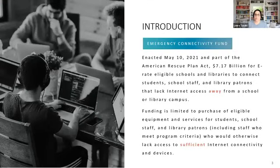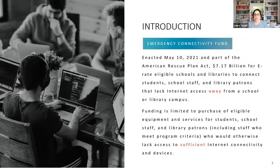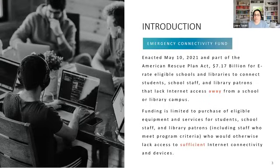A little introduction to the Emergency Connectivity Fund: it was enacted on May 10th of this year as part of the American Rescue Plan Act. It's $7.17 billion for E-Rate eligible schools and libraries to connect students, staff, and library patrons that lack internet access — specifically away from a campus. Library patrons include library staff if they meet the criteria for participating in the program.